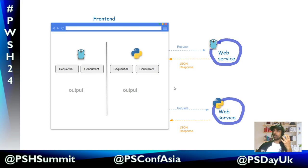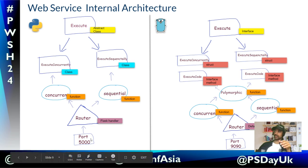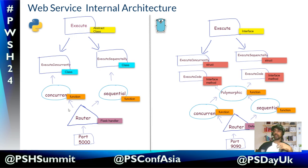Let's go and see how the logic is written inside the web service. This is the web service internal architecture — the left side is Python and the right side is Go. The Python web service listens on port 5000 and Go listens on port 1990. In Python, I am using Flask as a router handler which routes traffic according to the incoming request. If the user presses concurrent, the router passes it to the concurrent function; if sequential, it routes to the sequential function. The same routing logic applies for Go using the default HTTP handler.